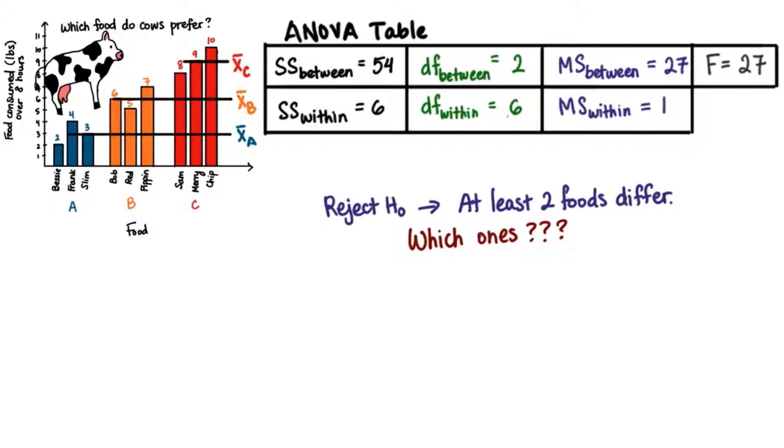But we don't know if these differences are due to sampling error. Therefore, we need to do additional testing to see which means are different. This additional testing is called multiple comparison tests.